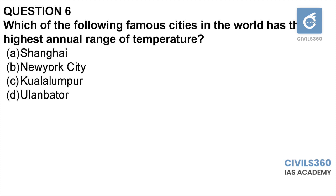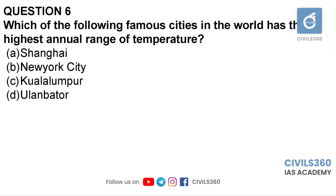Sixth question: which of the following cities has the highest annual range of temperature — Shanghai, New York, Kuala Lumpur, or Ulaanbaatar? The annual range of temperature is the difference between the hottest and coolest month. High annual temperature range is observed in continental interior places, not coastal cities. All options except Ulaanbaatar are coastal cities with a moderating effect. Ulaanbaatar is the capital of Mongolia — landlocked between Russia and China — and has a very high annual range of temperature. Sixth question: option D.